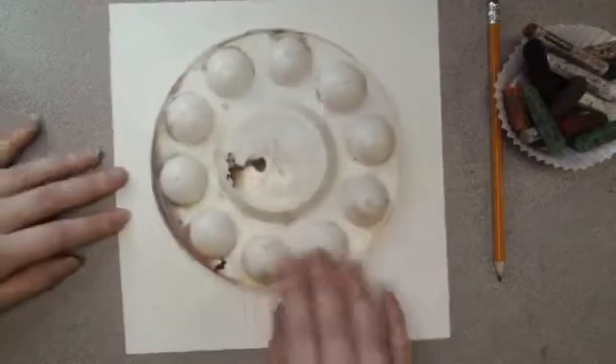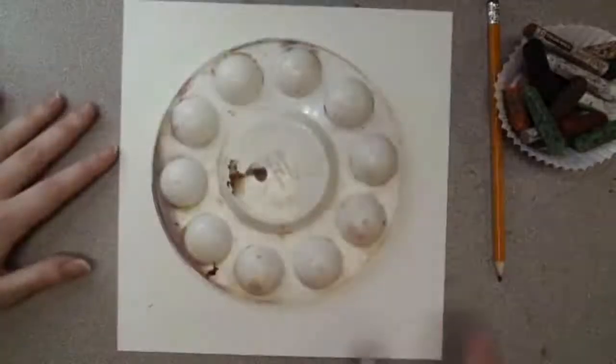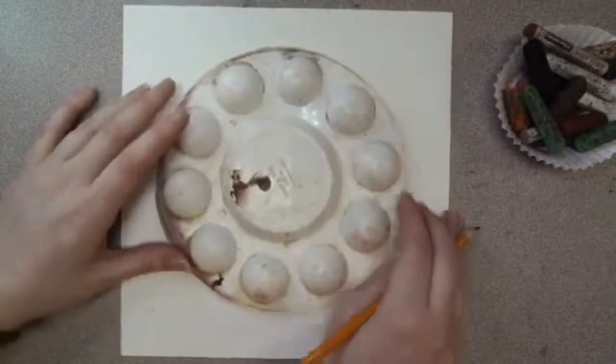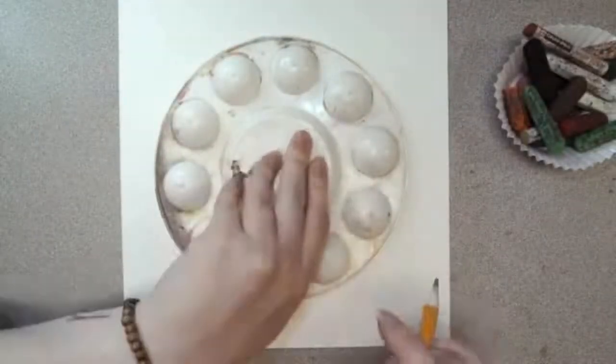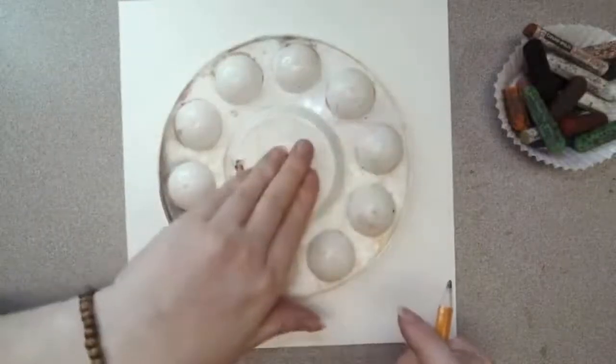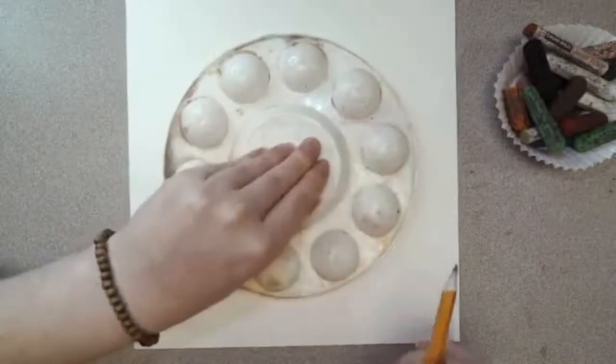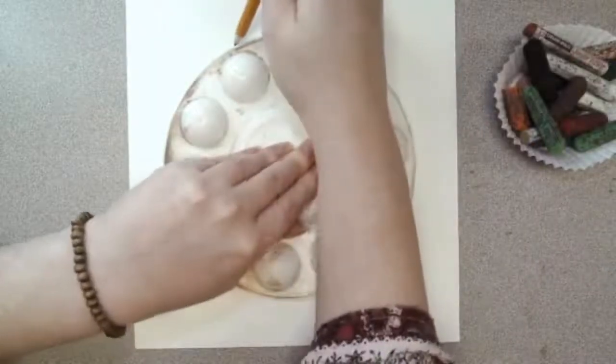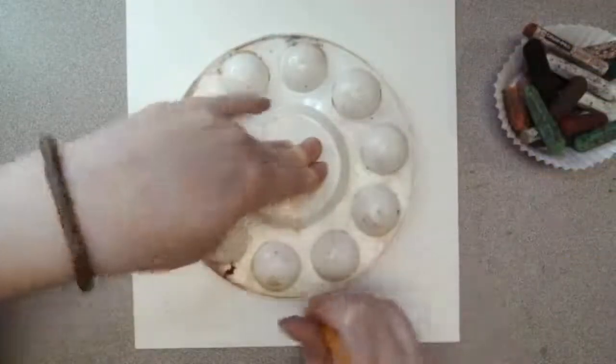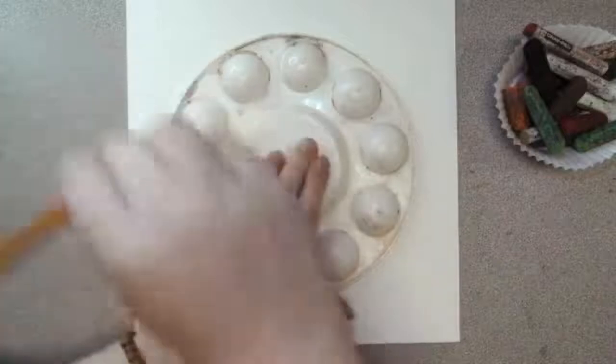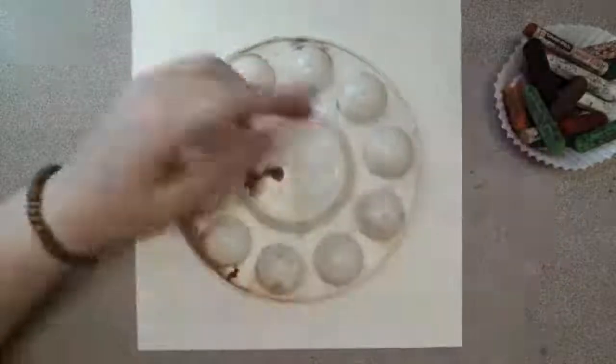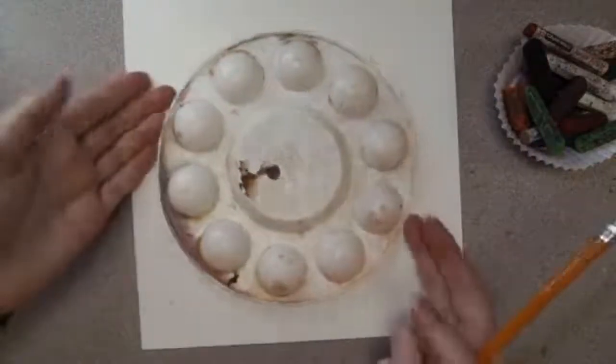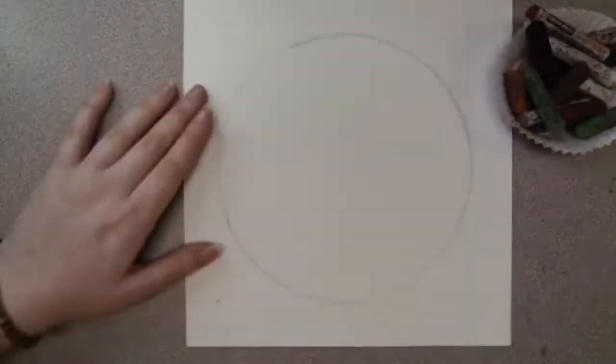So I am going to take my circle template, whatever you have. And if you can't find anything circular, then guys, you can just try your best to freehand this circle shape. So I'm going to take my hand and hold down whatever I'm tracing so that it doesn't move around. With my other hand, I have my pencil and I'm holding it up against this palette to make sure that it doesn't go anywhere else. And I'm just tracing all the way around. Once I go all the way around, I can pick up my circle and we're done with this.